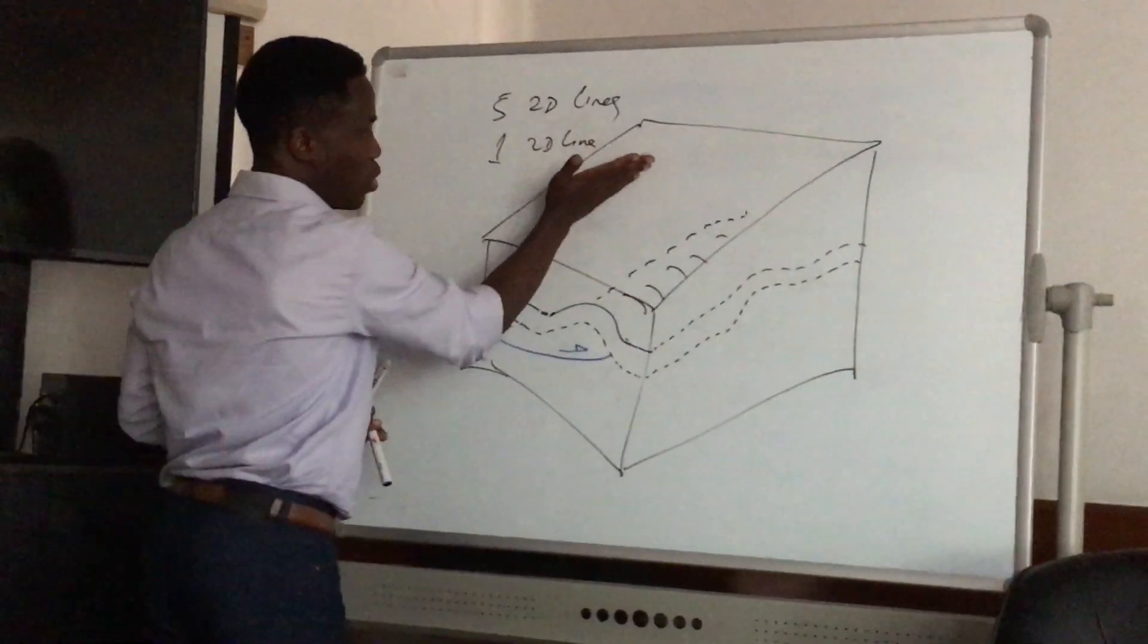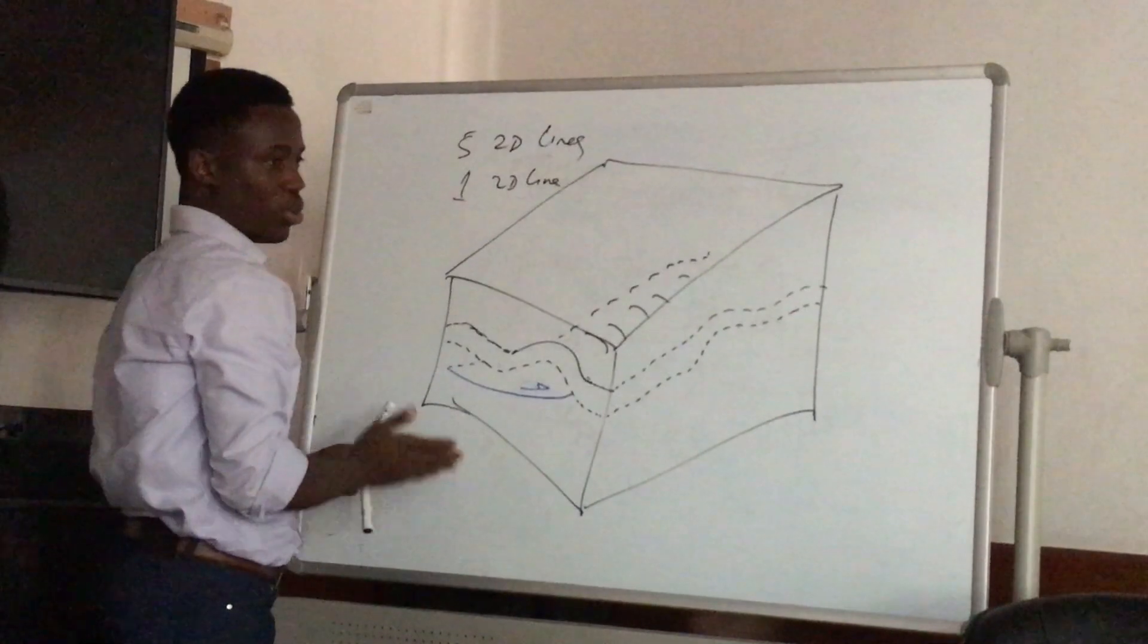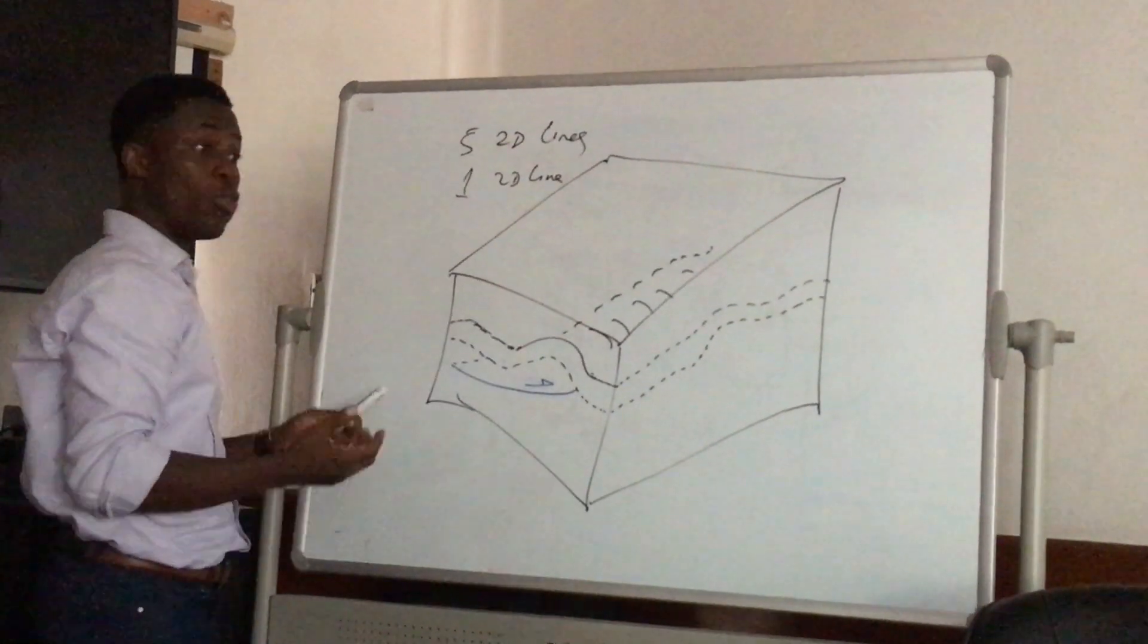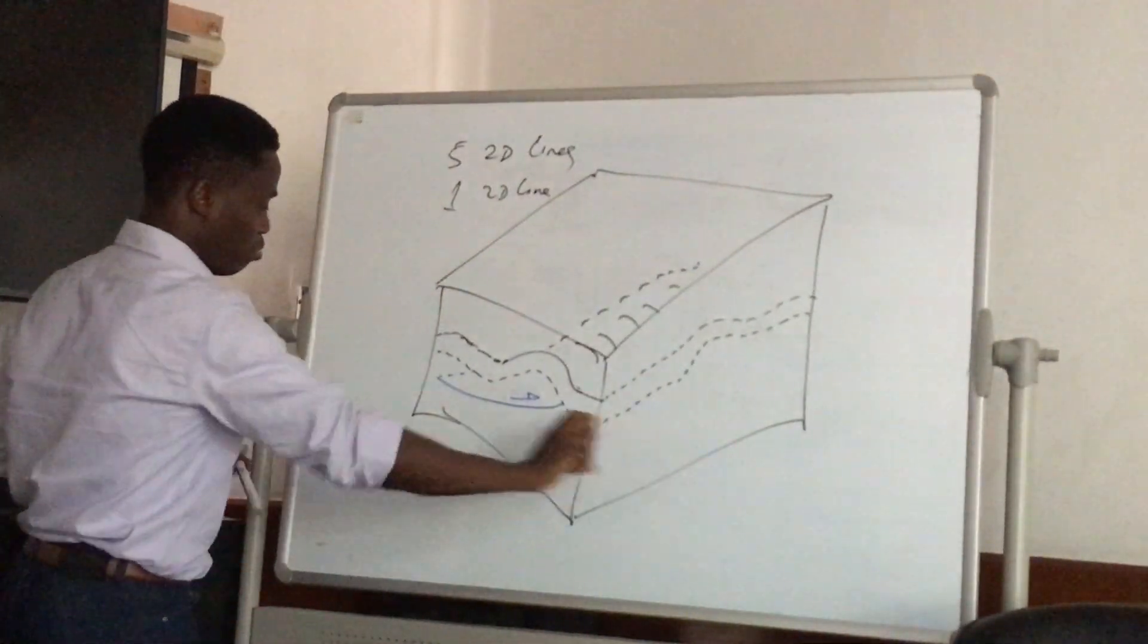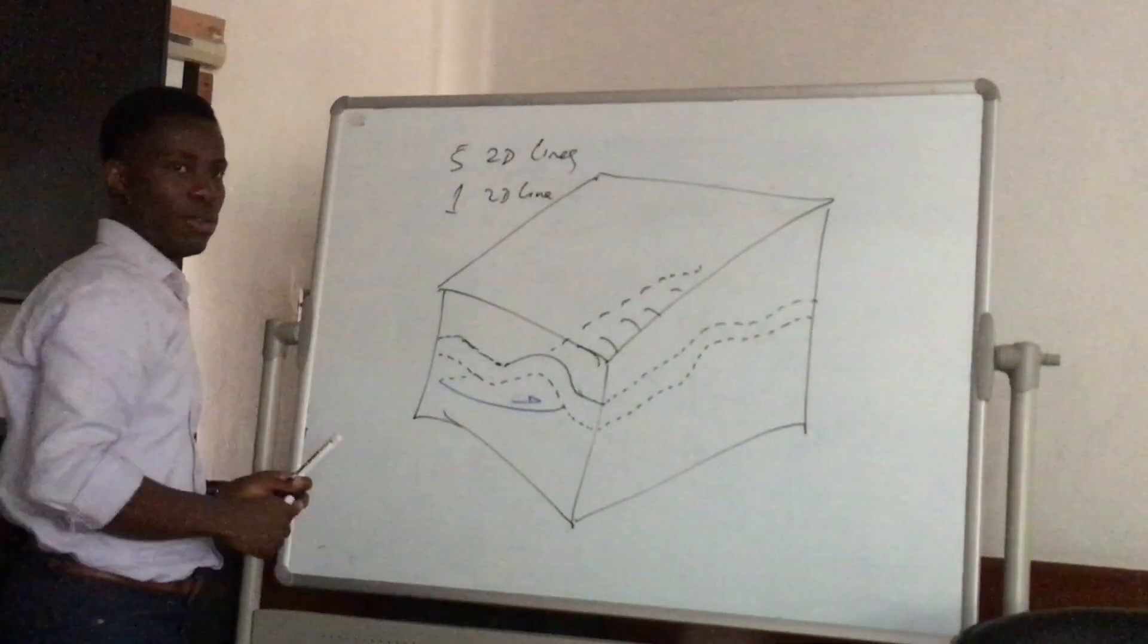So I'm going to now decide to take a number of 2D lines along this. But I won't be taking 2D lines in this other direction that is parallel to the structure because I will miss it.